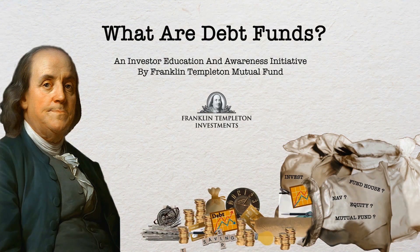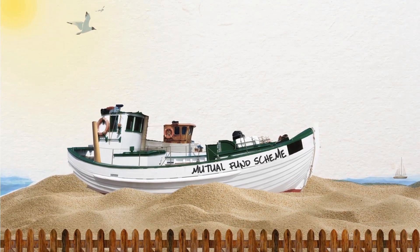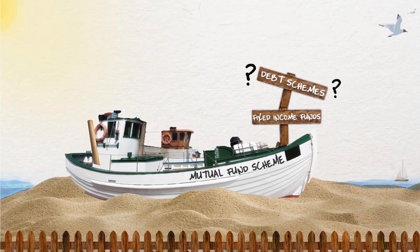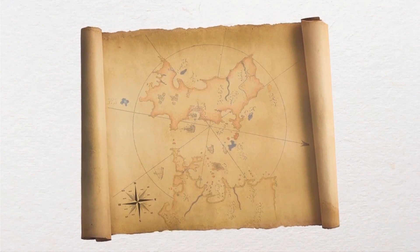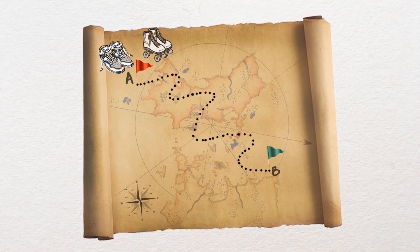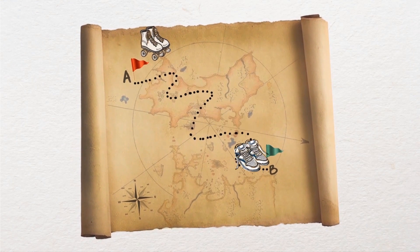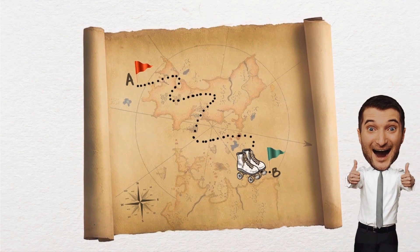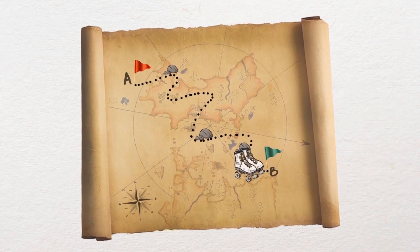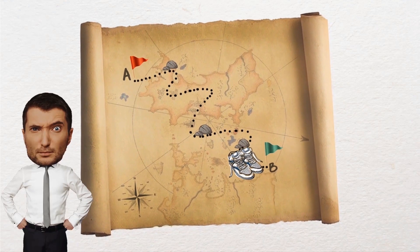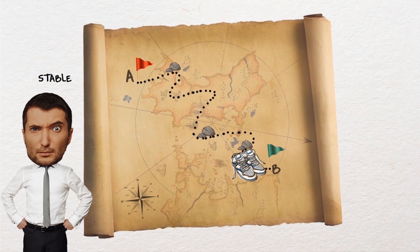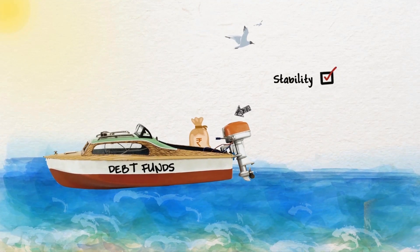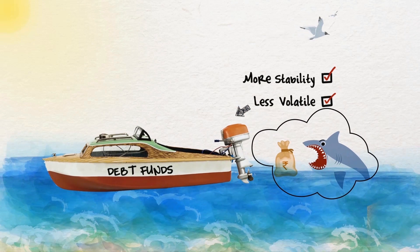What are debt funds? You've probably heard of a mutual fund scheme called debt schemes, or popularly known as fixed income funds. Here's an easy example: say you need to get from point A to point B and have two choices — wear your regular shoes and walk, or put on roller skates and glide there. The roller skates are more exciting but may come with bumps and falls. The walking shoes are less exciting but much more stable. When you talk about debt funds, you're talking about stability.